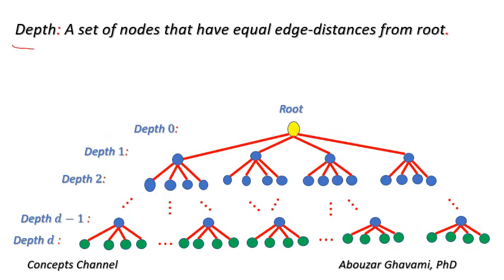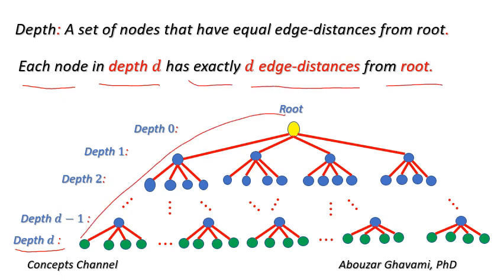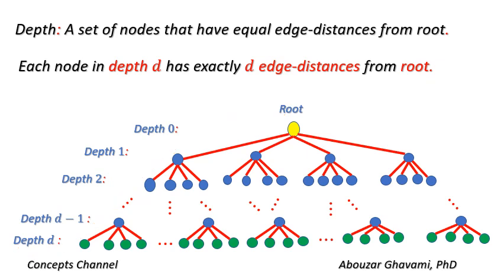A depth is a set of nodes that have equal edge distances from the root. Each node in depth d has exactly d edge distances from root. For example, each node in depth 2 has exactly two edge distances from root.